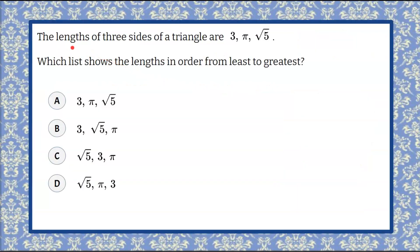We're told that the lengths of three sides of a triangle are 3, pi, and the square root of 5. We're asked which list shows the lengths in order from least to greatest and we're given four choices.